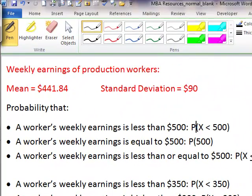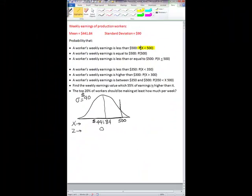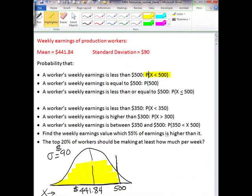The problem is asking for probability that weekly earnings is less than $500. Less than $500 means these numbers or values less than $500 or this area that I am shading yellow.